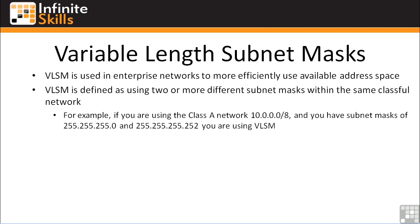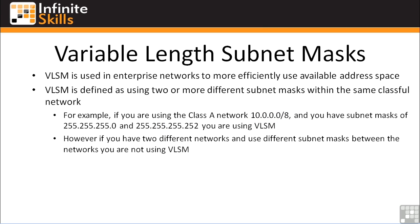For example, if you're using the class A network 10.0.0.0/8 and you've broken it down into some class C networks and some /30 networks for your WAN connections, you're using VLSM because you have two different network masks within the same classful network. However, if you have two different networks and use different subnet masks between those networks, you're not using VLSM.